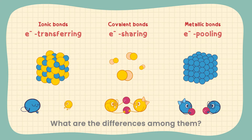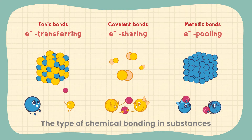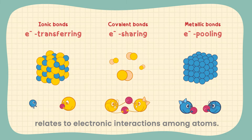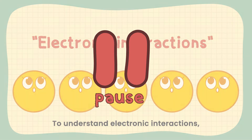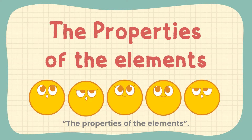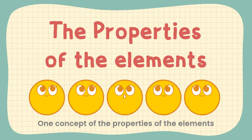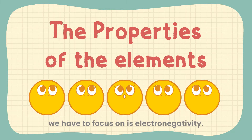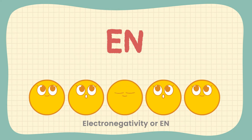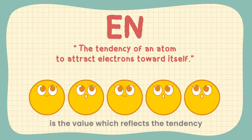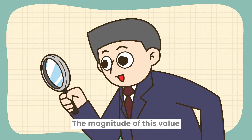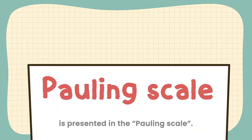What are the differences among them? The type of chemical bonding in substances relates to electronic interactions among atoms. To understand electronic interactions, we have to understand the concept of the properties of the elements. One key concept is electronegativity, or EN, which is the value that reflects the tendency of an atom to attract electrons towards itself. The magnitude of this value is presented in the Pauling scale.